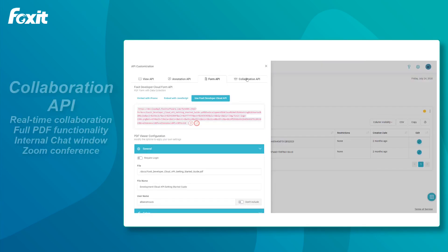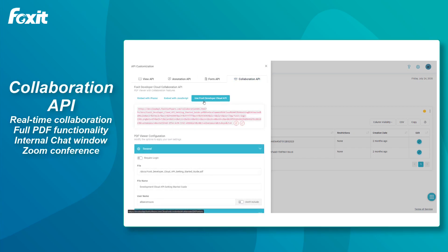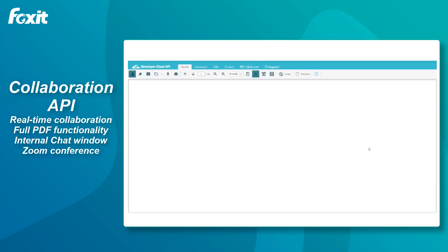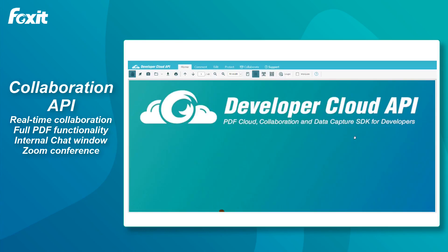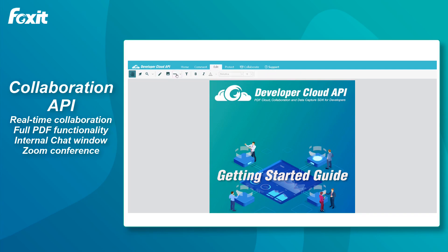Last but certainly not least, we're going to look at the Collaboration API. The Collaboration API contains the full set of functionalities that the viewer can provide. We can see all the tabs here — we have the comment tab with all the annotations, and we have a text editing tab. This allows you to add text inside the PDF page.